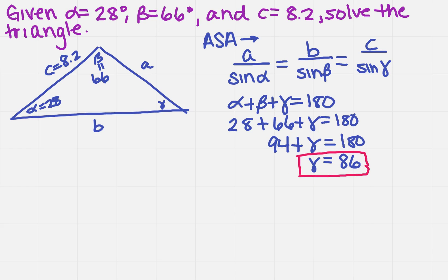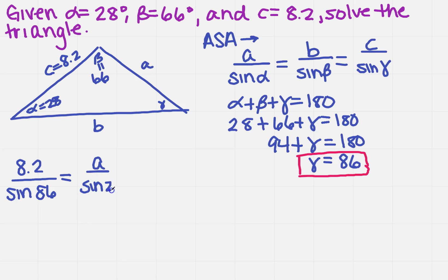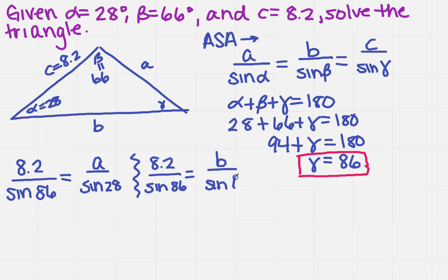Now I need to find the other two sides. Using the Law of Sines, I can set up: 8.2 divided by the sine of 86 equals A over the sine of 28. And again with the C side: 8.2 over the sine of 86 equals B over the sine of 66.